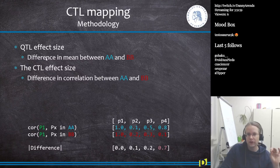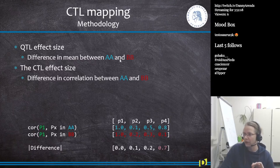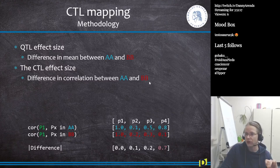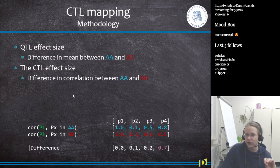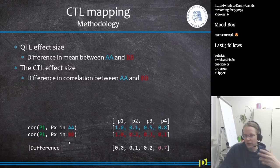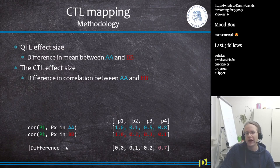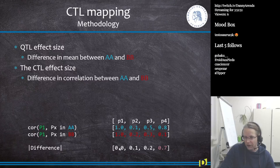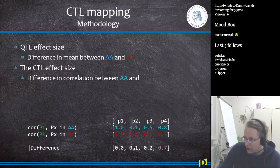Then the next step is to define the effect size. The effect size in QTL is defined as the difference in mean between the AA group and the BB group. But in CTL mapping, the CTL effect size is defined as the difference in correlation between the AA and BB groups — just like QTL but now instead of looking at the difference in mean, we're looking at the difference in correlation between phenotypes. And to make it easy we just take the absolute difference. So minus 0.1 becomes 0.1. When we do that, we calculate the difference vector — P1 to P2 in AA minus P1 to P2 in BB gives values of 0.1, 0.2, and 0.7.